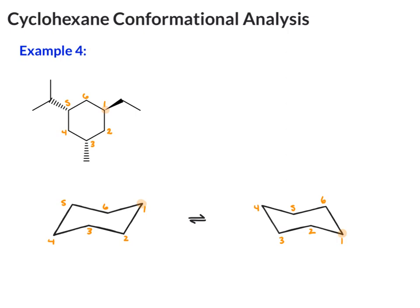Now let's put our groups in. In carbon one, we have an ethyl group that is out. So in carbon one, that ethyl group should become an up group. And the up here is the axial. On carbon three, we have a methyl group that is back.